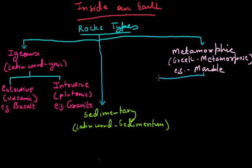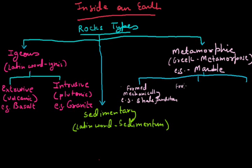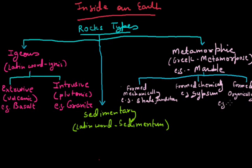Now we can divide this into three parts based on how they are formed. The first is formed mechanically - because of mechanical changes, examples are like shell, sandstone, etc. The next is formed because of chemical changes - chemically. Gypsum is an example of it. And the third is formed organically, like chalk, dolomite, etc.